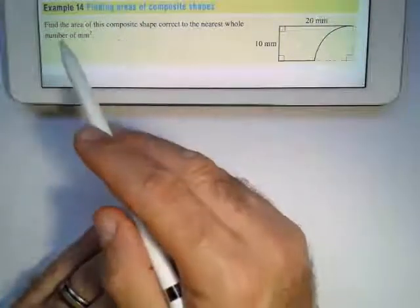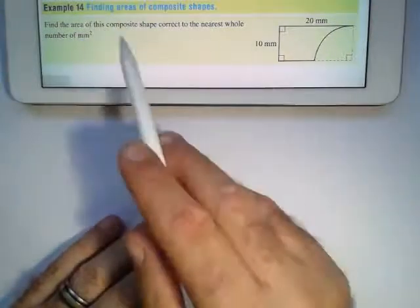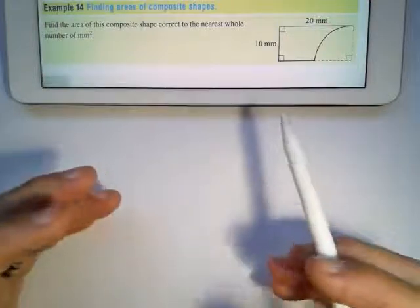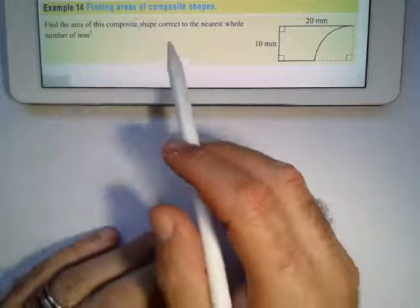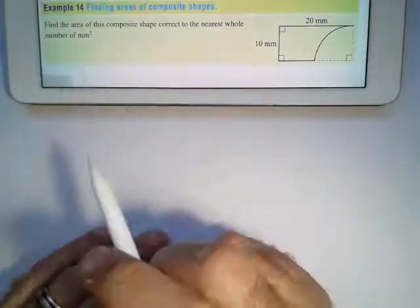Finding areas of composite shapes. They say find the area of this composite, which means a shape that is made up out of other pieces or other shapes, to the nearest whole number of millimeters squared.